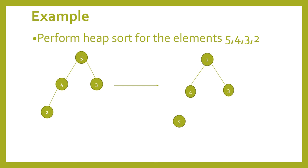So 2 is replaced with 5. Then the tree becomes 2, 4, and 3. 5 is sorted here.